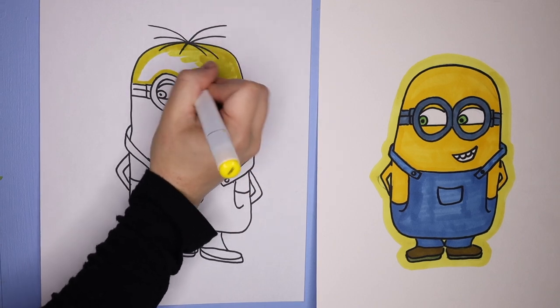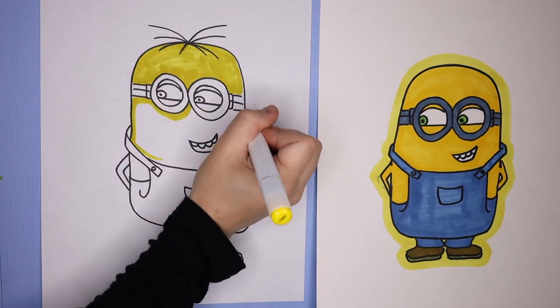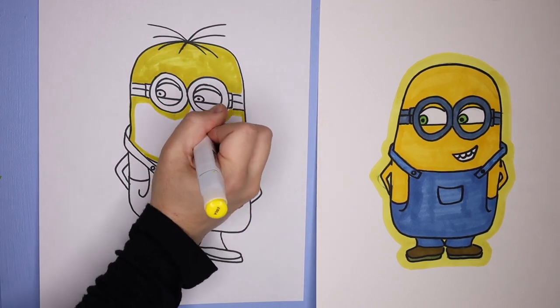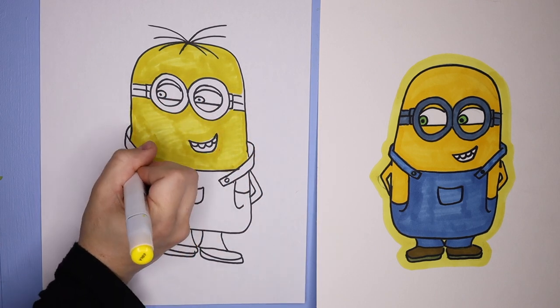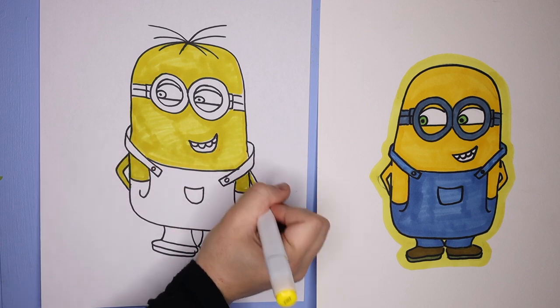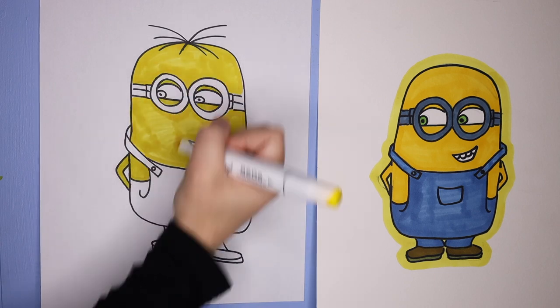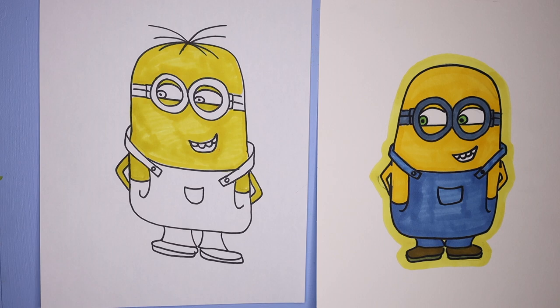Then you can take a yellow marker and color in your minion. If you like any of the tools that we are using, I have them all linked down below. So these markers are linked down below. So I'm filling that body, those arms, and the eyelids. Don't forget about the eyelids.